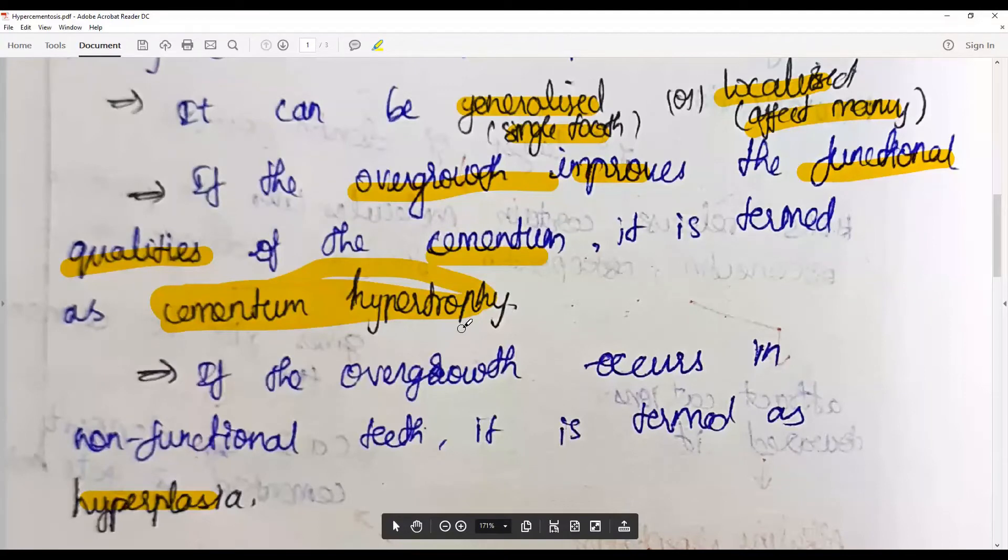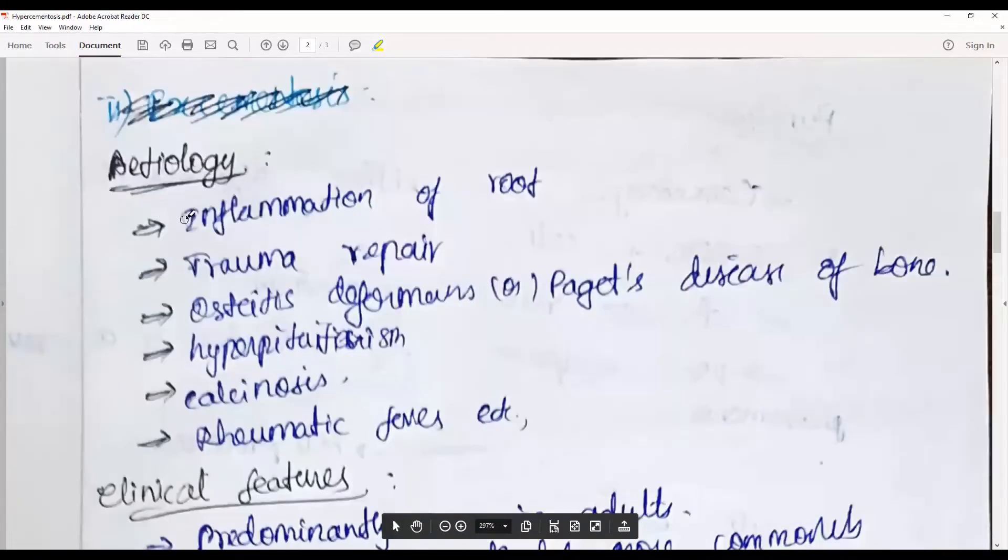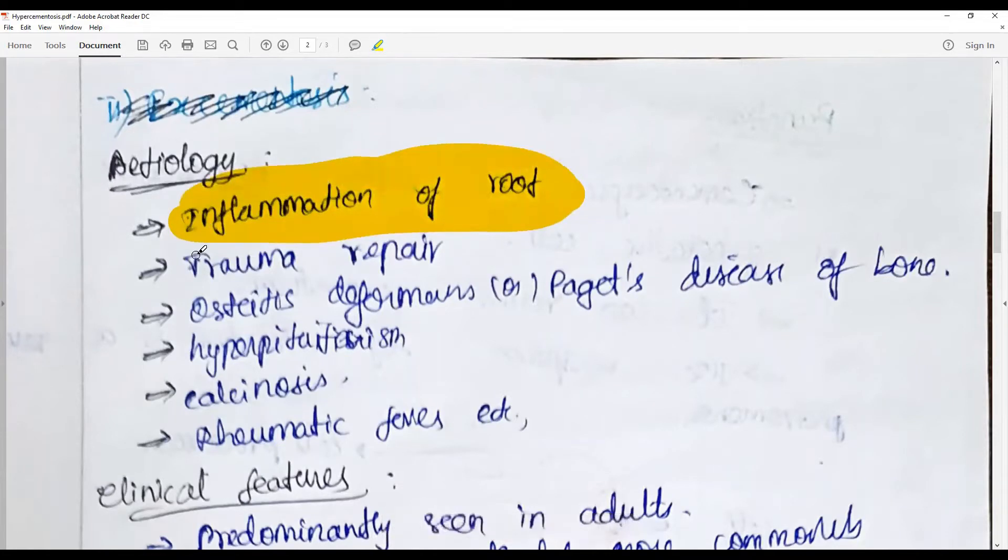Increased size of the cell and increased number of cells: hypertrophy and hyperplasia. The etiology could be inflammation when involving the root structures, trauma and subsequent repair of the cemental structures, diseases like osteitis deformans or Paget's disease.